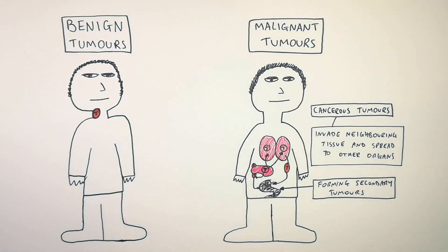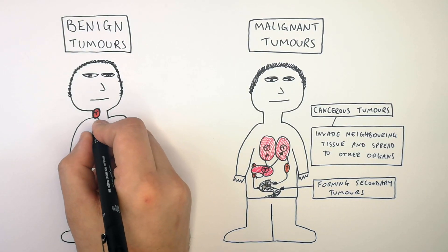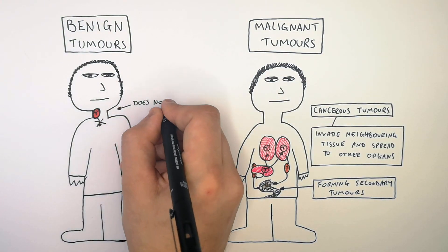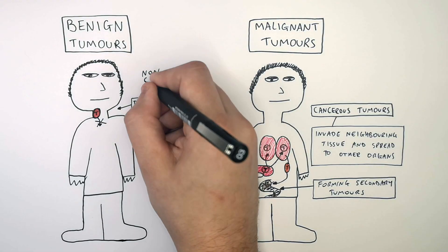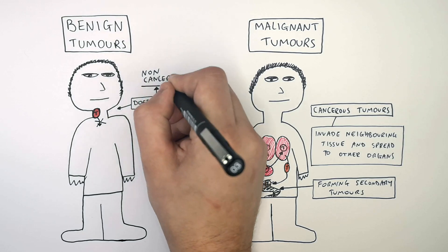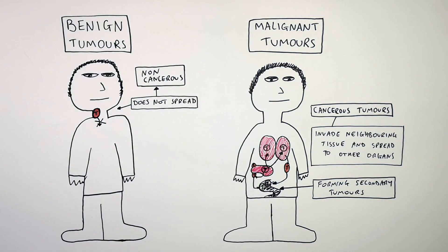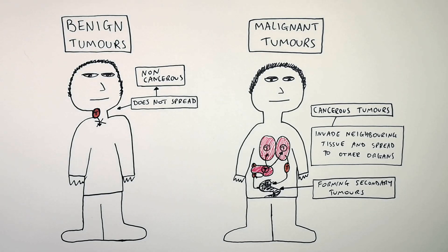A benign tumor does not spread, so we say that it is a non-cancerous tumor. It does not invade neighboring tissues or neighboring organs — it stays in the tissue where it is growing.